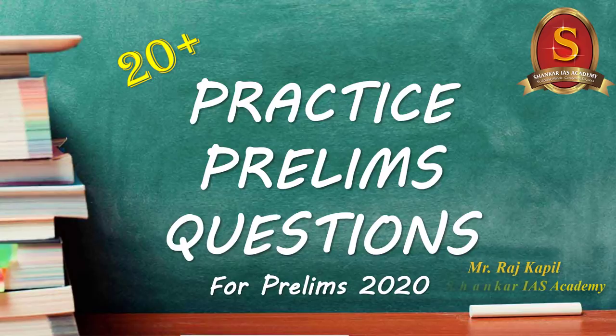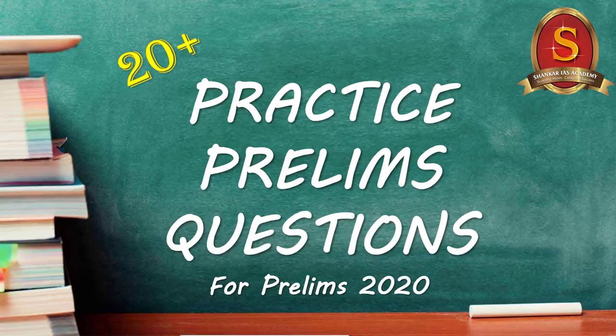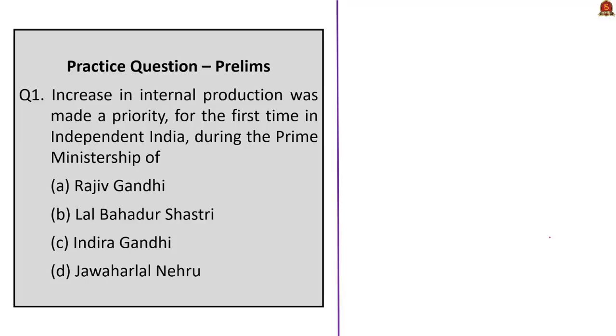In this video we discuss a number of practice questions which will be helpful for Prelims 2020. The first question: increase in internal production was made a priority for the first time in independent India during the prime ministership of whom?